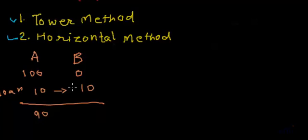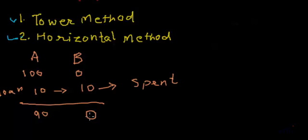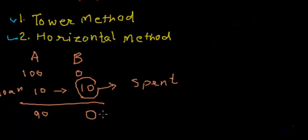B spent the money, so now B has zero again. After taking the loan B had ten rupees, but having spent it, B now has zero. At this point, B actually has a loan of ten rupees because those ten rupees were taken from A and must be returned.